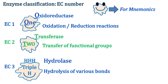EC1 stands for oxidoreductase. These are the enzymes that catalyze oxidation and reduction reactions in the cells. EC2 stands for transferases. These are the enzymes that transfer a functional group from one molecule to another. EC3 stands for hydrolases. These are the enzymes that catalyze the hydrolysis of various bonds.